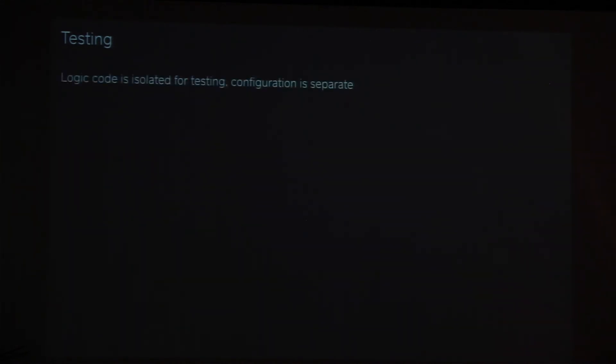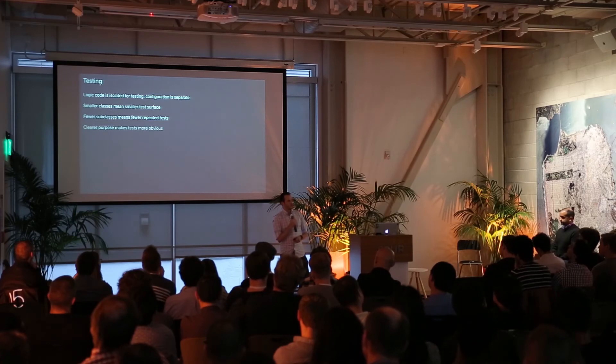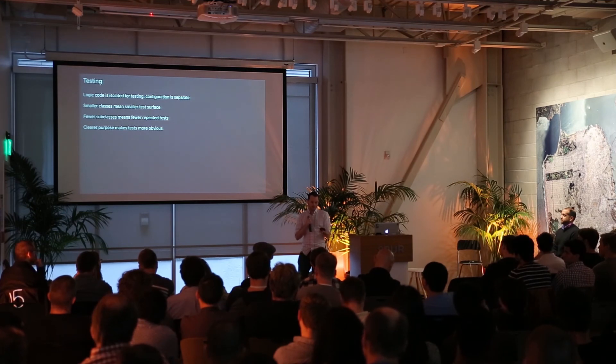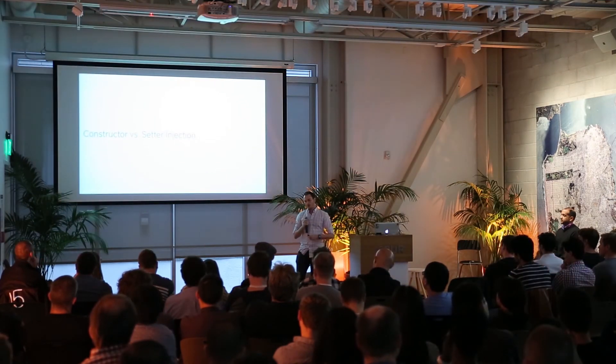And again, this helps in testing. So now your classes are all about behavior. They're all about business logic, which means you can test the whole class. You don't have to worry about, well, is this configuration and it might change and I don't need to worry about it. All of your code is good code worth testing. The smaller classes mean you have a smaller test interface. As most of you probably know, it's easier to test ten objects that have one method than it is to test one object that has ten methods. Fewer subclasses mean fewer repeated tests. Every time you subclass, you really need to test that object to make sure all of the behaviors are the same because you might have changed some little piece that has a cascading effect. And the clearer purpose makes the test more obvious. If you have a very specific purpose for an object, you kind of know what it's supposed to do.